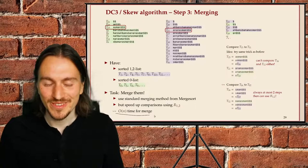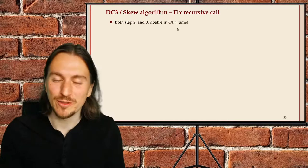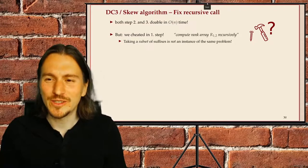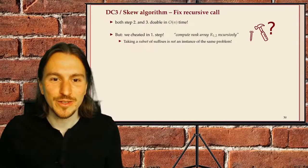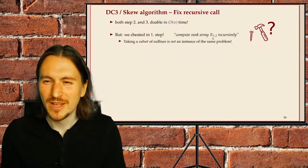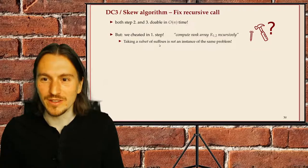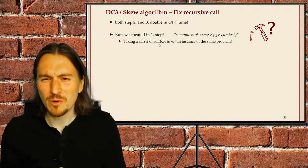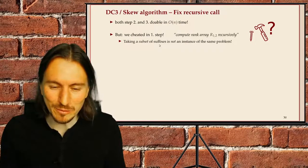This is almost it. We've shown that both inducing the ranks for R3 and the merging are linear time. But if you look closely, we actually cheated in step one. I simply said step one was: recursively sort the suffixes that start at positions not a multiple of three, and compute R12 recursively. But it's not really an instance of the same problem, because to call this recursively, we would need a single string so that these are the suffixes of that string. But what we have is a weird set of strings — two out of every three suffixes of a given string. How can we even apply the method to this?